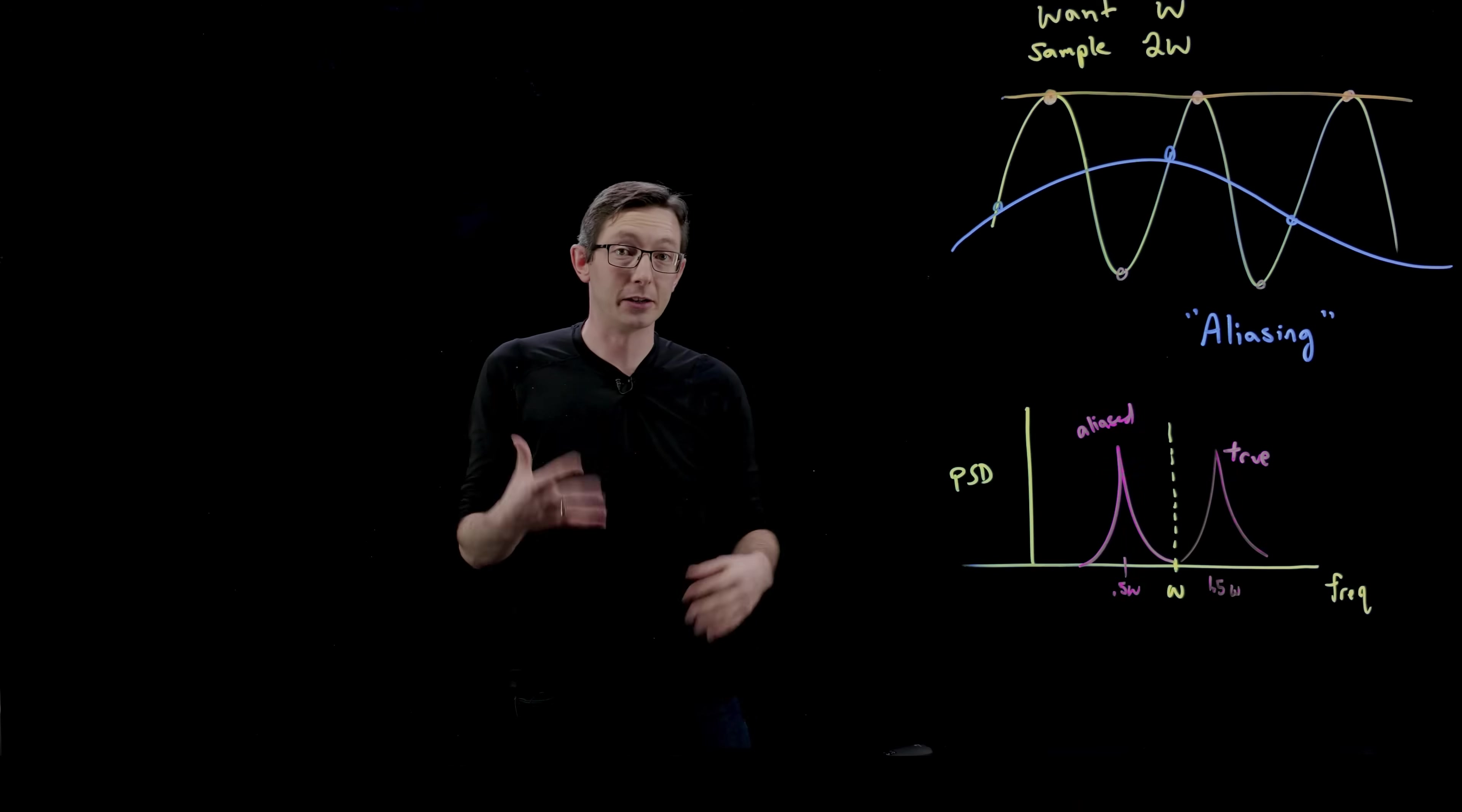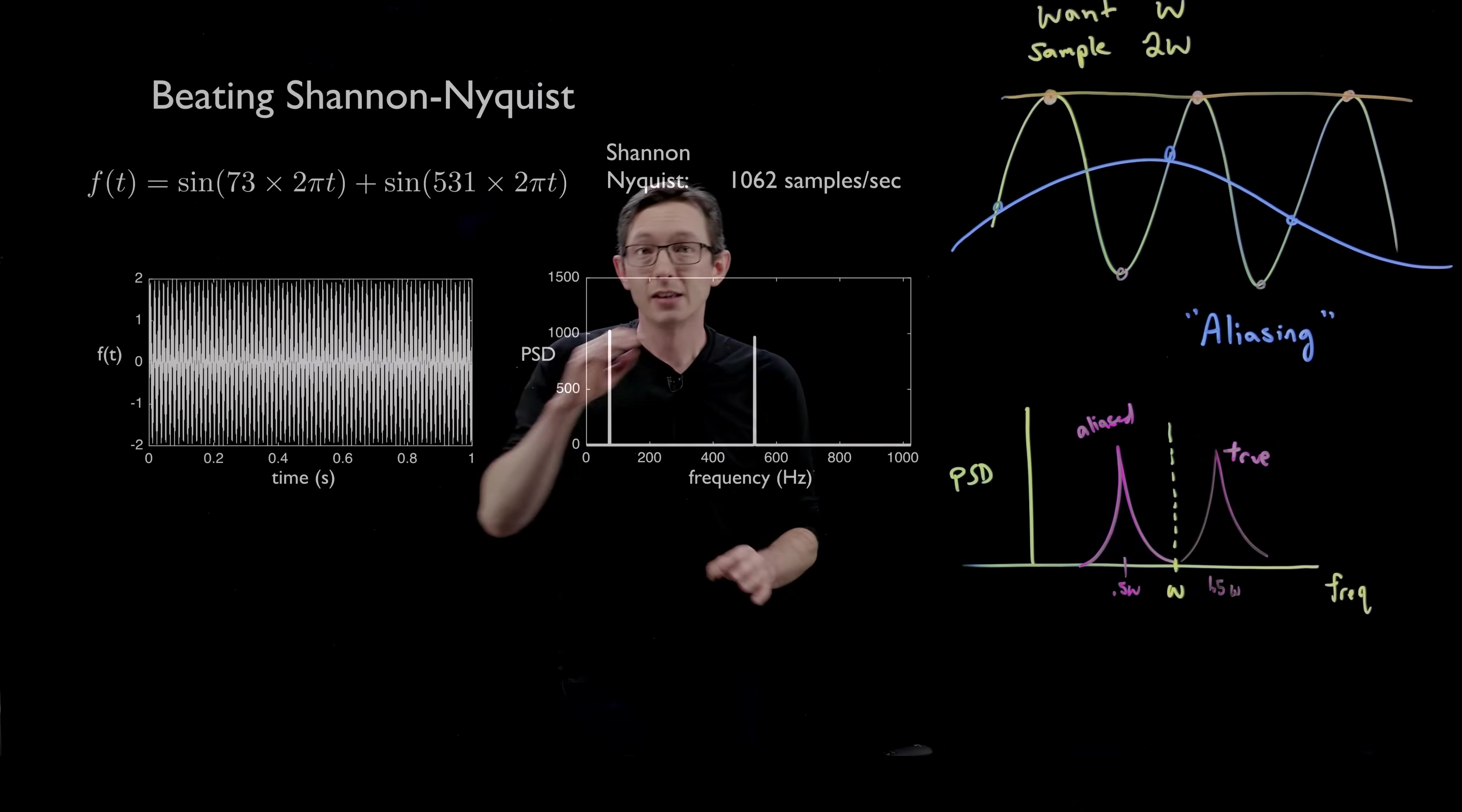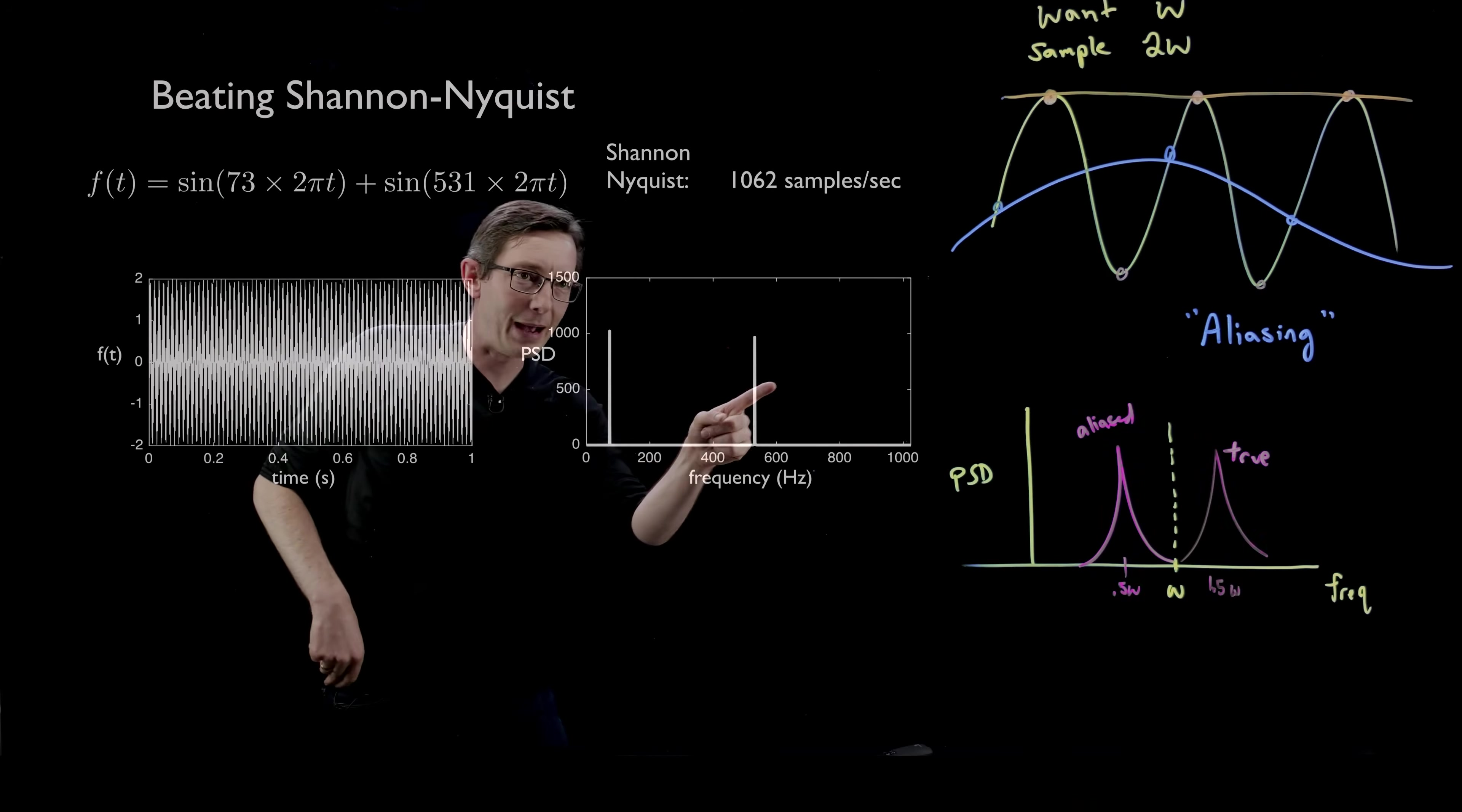But if your signal is not broadband or dense, if it is only a couple of frequencies that are high frequencies, you technically can, in fact, sometimes, under some conditions, beat the Nyquist sampling frequency on average. And I'm going to talk about this more in the context of compressed sensing and reconstructing audio signals. But for now, I'm just going to walk you through at a very high level what we expect to see. So here we have a signal f, which is the sum of two sine waves, at 73 hertz and 531 hertz. And so what the Shannon-Nyquist sampling theorem would say is that to fully resolve this f, I would have to sample twice the highest frequency or twice 531, which is 1062 samples per second. That's how fast I'd have to sample to perfectly reconstruct this signal. And here's the power spectrum, here's the signal.